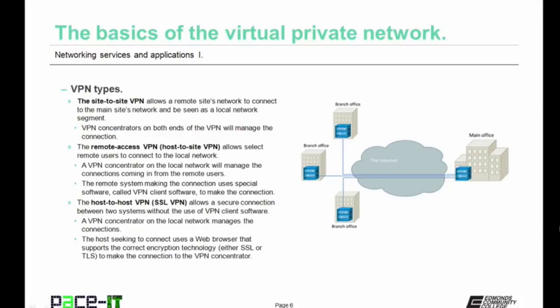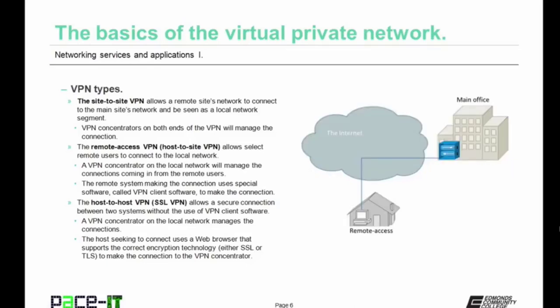There are several different types of VPNs. There is the site-to-site VPN, which allows a remote site's network to connect to the main site's network and be seen as a local network segment. VPN concentrators on both ends of the VPN will manage that connection. Then there's the remote access VPN, also called a host-to-site VPN, which allows select remote users to connect to the local network. A VPN concentrator on the local network manages the incoming connections from remote users.